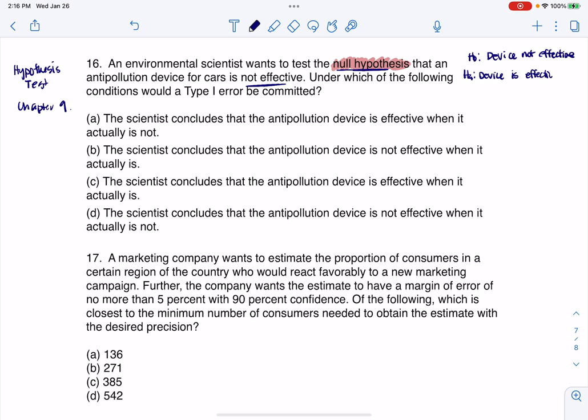Okay, so we've always got four possibilities. The null is correct and we fail to reject it. The alternate is correct and we reject the null. But the errors happen when the null is correct and we mistakenly reject it, right? Or the alternate is correct and we fail to reject the null. So type 1 error.